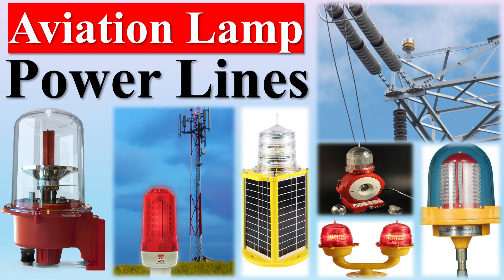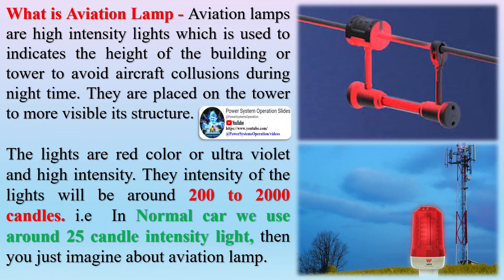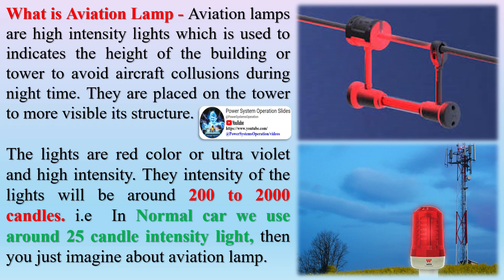Aviation obstruction lighting is used to enhance the visibility of structures or fixed obstacles which may conflict with the safe navigation of aircraft. Obstruction lighting is commonly installed on towers, buildings, and even fences located in areas where aircraft may be operating at low altitudes.